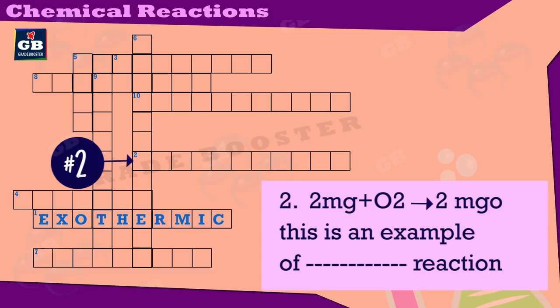2Mg + O2 gives rise to 2MgO. This is an example of what type of reaction? Yeh kis prakar reaction ka example hai? Answer: combination.